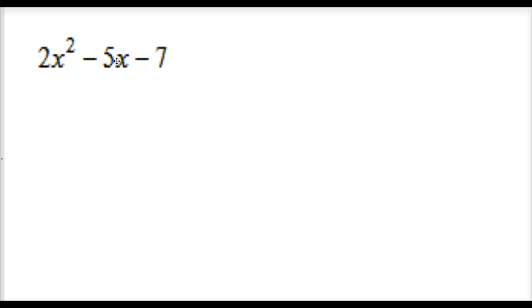Next example, 2x squared minus 5x minus 7. This is another nice one for us, because the leading factors, 2 and our end term c, are both prime again. So we have factors of 2, which are 2 and 1. Factors of 7, which are 7 and 1.